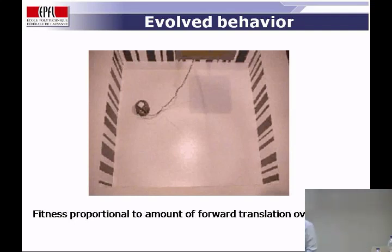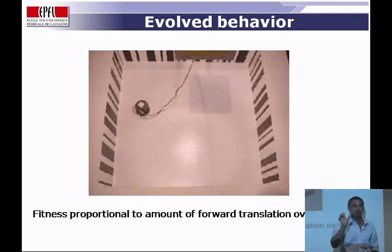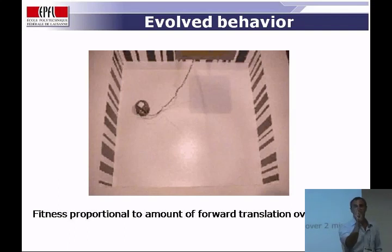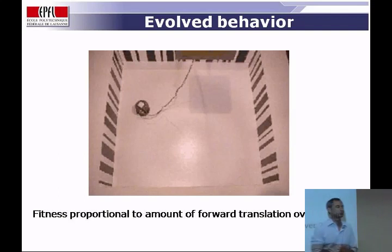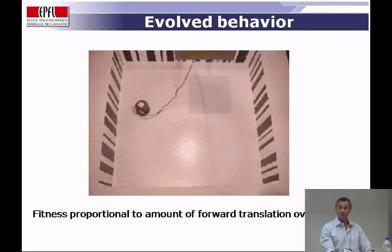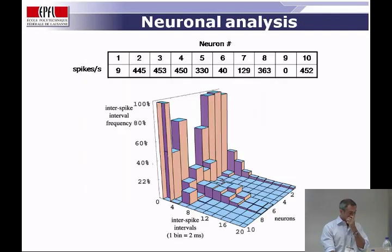To evolve non-trivial behavior, you need irregular spacing of the stripes so the robot cannot use stripe distance as a proxy for wall distance. We then looked inside the brain of these robots to understand whether neurons were using firing rates or firing time to communicate. We had 10 internal neurons and counted spikes per second as the robot moved. They showed a wide variety of spiking rates — from very high bursting rates to almost zero activity. Some neurons were not active at all while the robot moved.